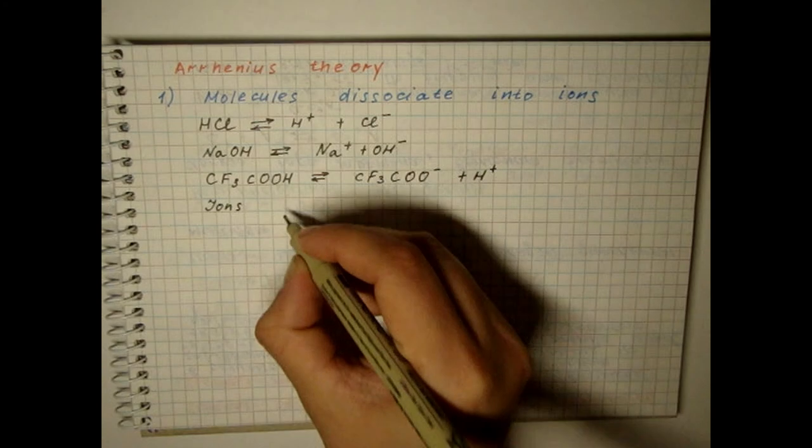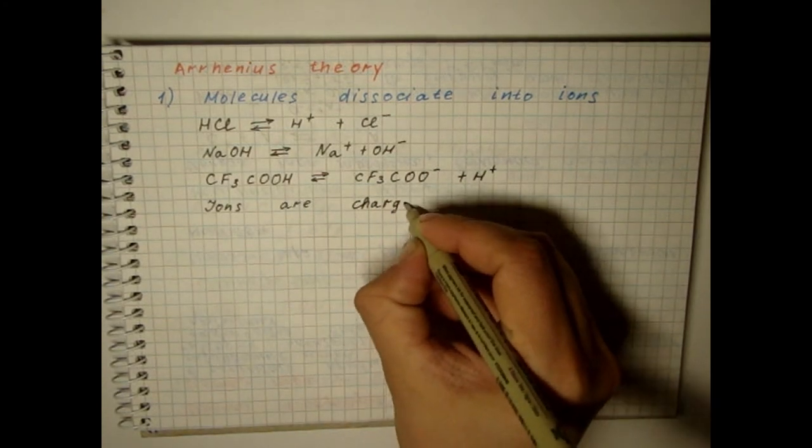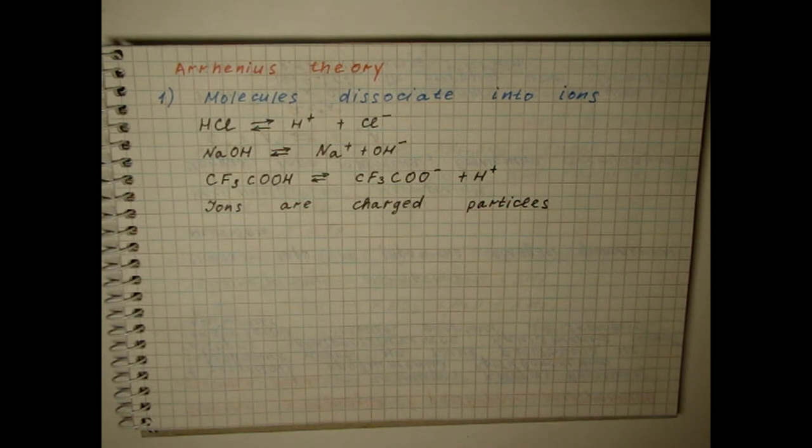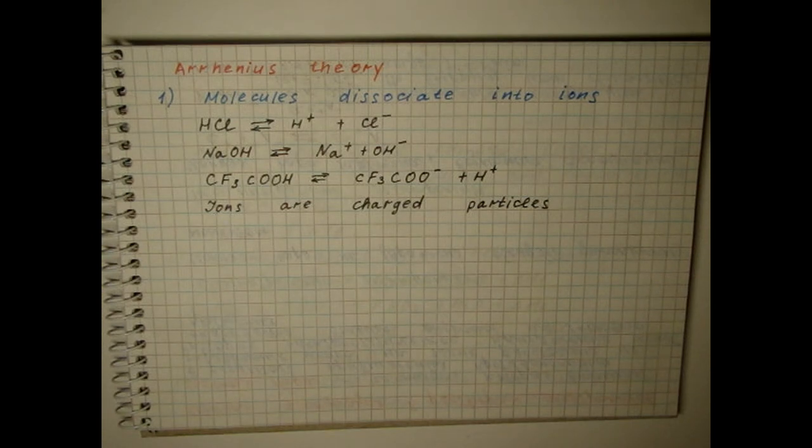Ions are charged particles which consist of individual atoms or groups of atoms. It was assumed that the ions in the solution behave like molecules of an ideal gas, which means that the molecules do not interact with each other.